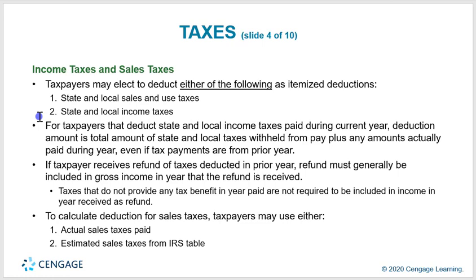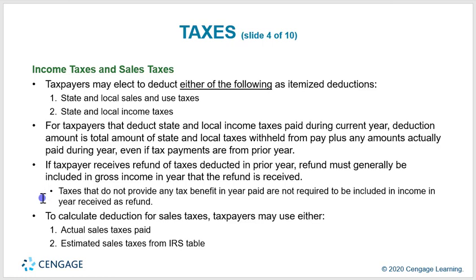Taxpayers may elect to deduct either state and local sales and use tax or state and local income tax as an itemized deduction. For those deducting state and local income taxes, the deduction amount equals total state and local taxes withheld from pay plus any amount actually paid during the year, even if the tax payments are from a prior year. If a taxpayer receives a refund of taxes deducted in a prior year, the refund must generally be included in gross income in the year it is received.